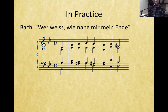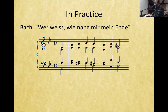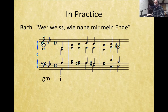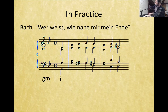First and foremost, what key are we in? We've got a key signature of two flats, so B-flat major. But does it sound major? No — so if it's not B-flat major, we say it's G minor. The first chord: stacking the notes gives us G, B-flat, D — that's the one chord in G minor. Because it has the root on the bottom, we just call it 'i.' We don't need a figured bass symbol.